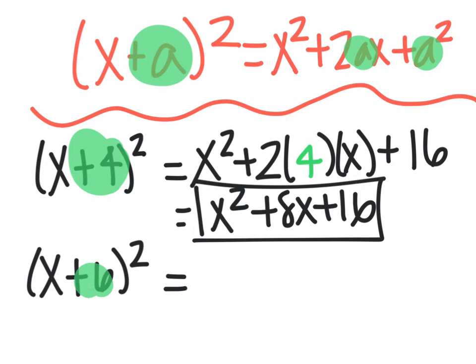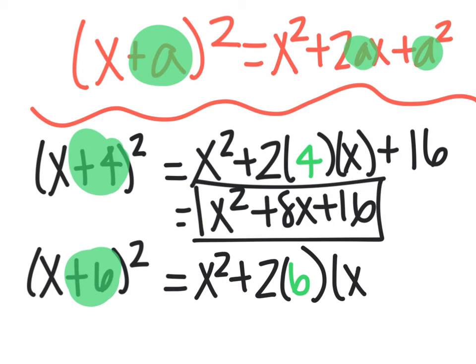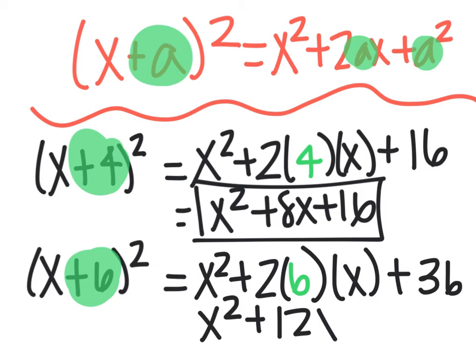Then I have (x+6)². Again, a is 6, so it's x²+2 times 6 times x, plus 6², which is 36. So I have x²+12x+36.